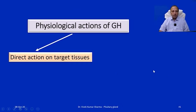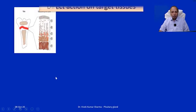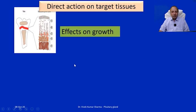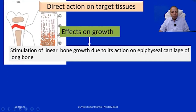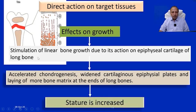Growth hormone performs actions in two ways: direct action on target tissues, and indirect action mediated via somatomedins, primarily IGF-1 and IGF-2 (insulin-like growth factors 1 and 2). Direct actions on growth include: in bone, growth hormone stimulates linear bone growth through action on the epiphyseal cartilage of long bones, causing accelerated chondrogenesis, widened cartilaginous epiphyseal plates, and more bone matrix laid at the ends of long bones — increasing the height of the person.